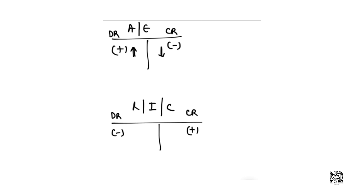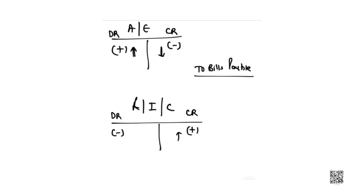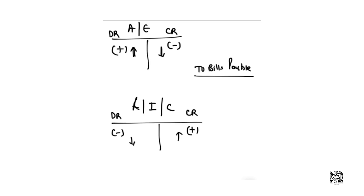Bill payables are your liabilities. When the drawee receives the bill, bill payable is credited. Liability increases from credit and decreases from debit. These are the rules of debit and credit, and you must focus on these rules if you want to do all the entries correctly in the chapter bills of exchange.